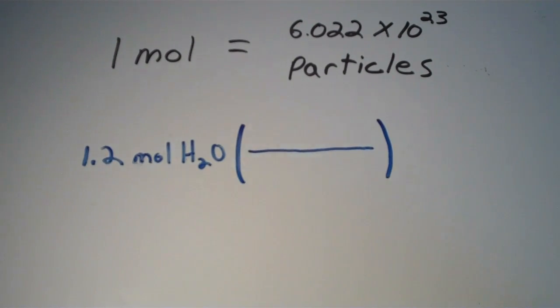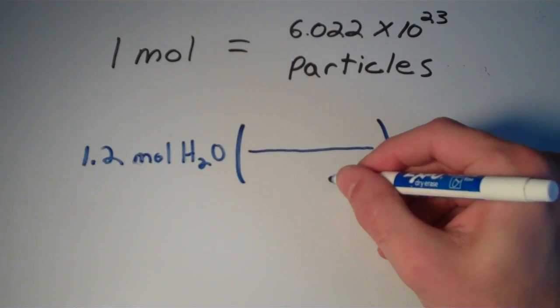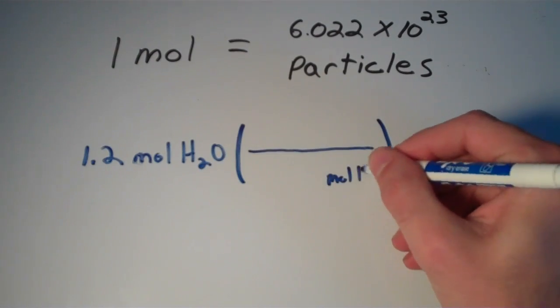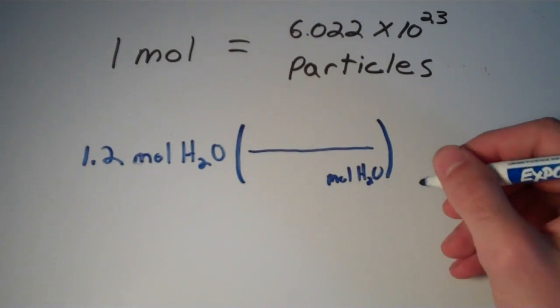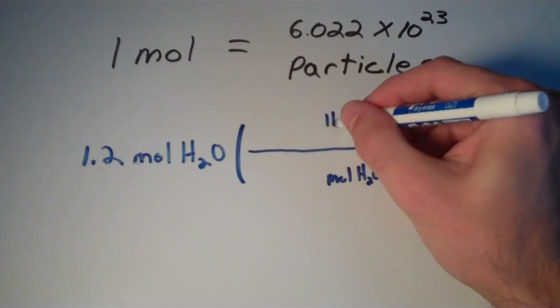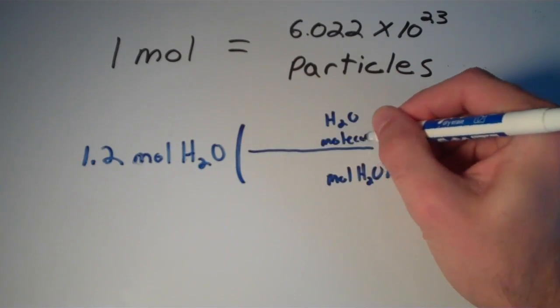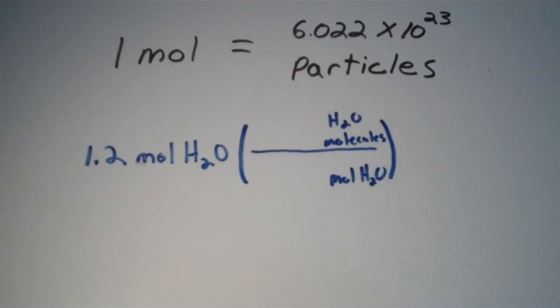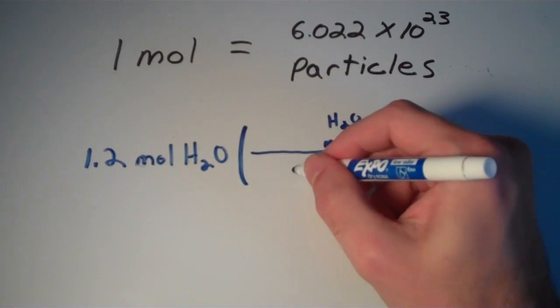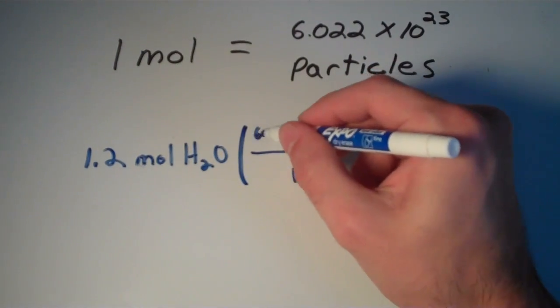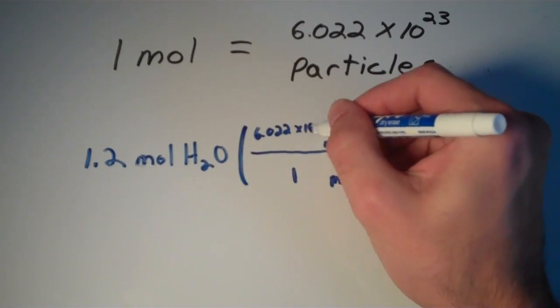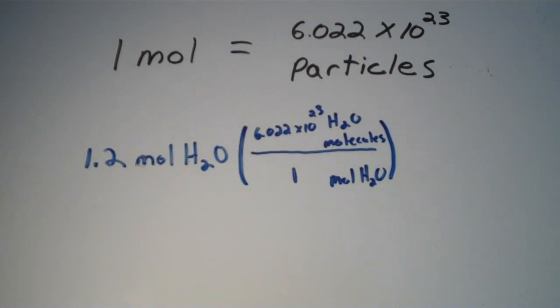So in this conversion, I'm going to put my moles of water on the bottom and I'm going to put my water molecules on top. And for every 1 mole of water, we have 6.022 times 10 to the 23rd water molecules.